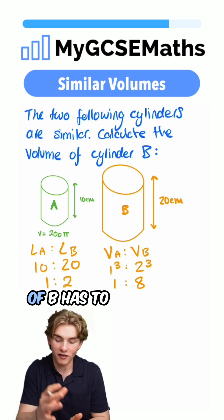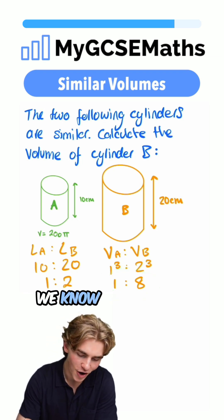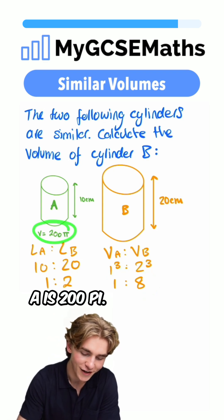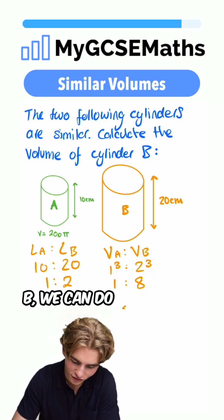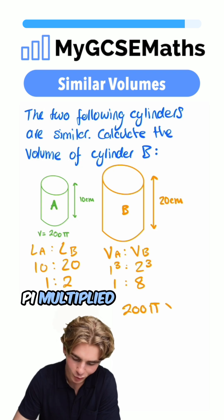That means the volume of B has to be 8 times the volume of A. We know the volume of A is 200π. So to find the volume of B, we can do 200π multiplied by 8.